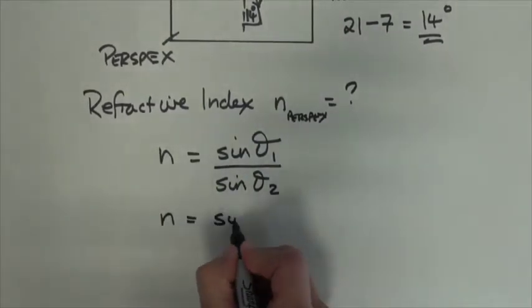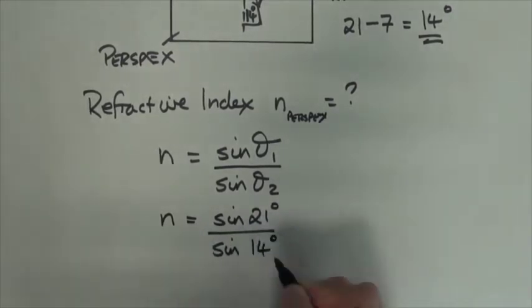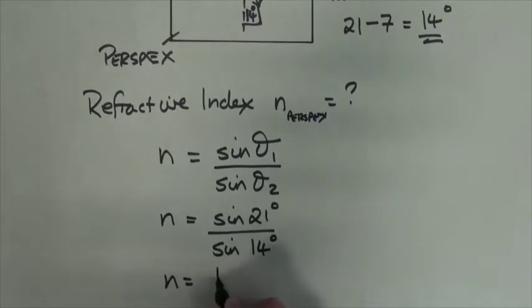So the perspex refractive index of perspex will be sine 21 degrees divided by sine 14 degrees. That means the refractive index of perspex is 1.48.